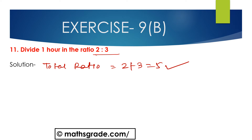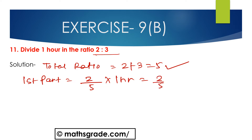The first part will be 2 divided by 5, multiplied with 1 hour. Since 1 hour is 60 minutes, that is 2 divided by 5 multiplied with 60 minutes. Cancelling 5 and 60 — since 5 multiplied by 12 equals 60 — we multiply 2 by 12, giving 24 minutes.